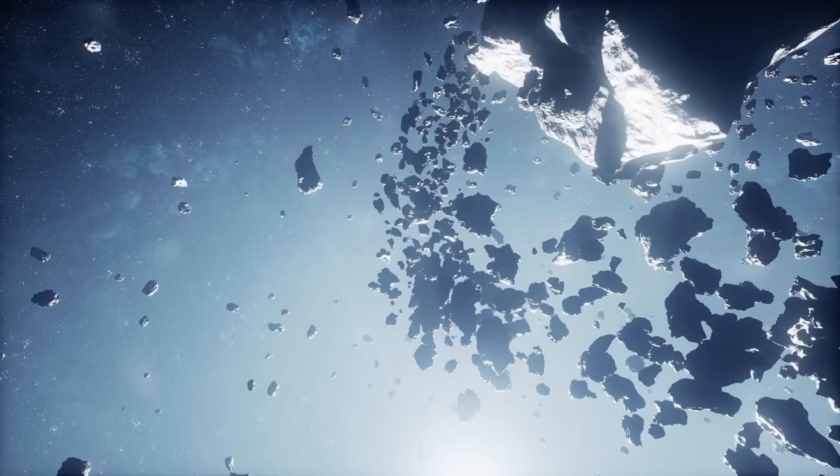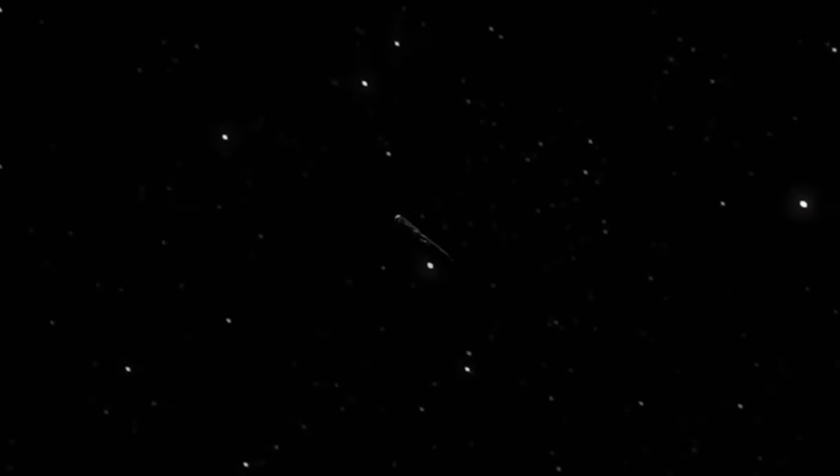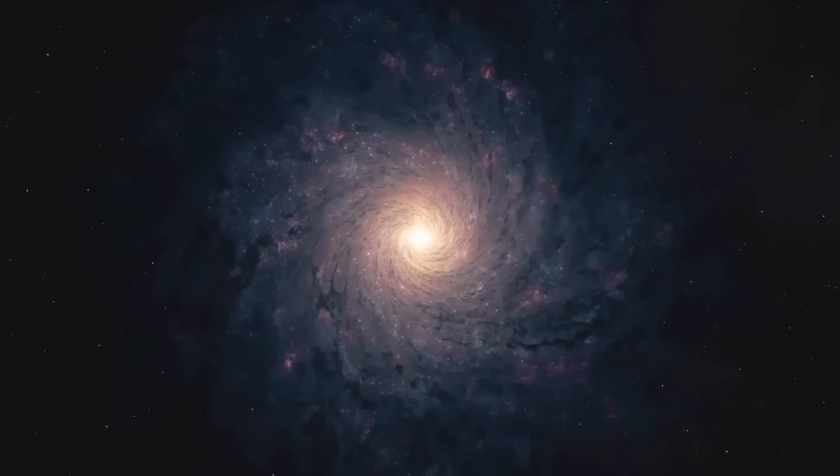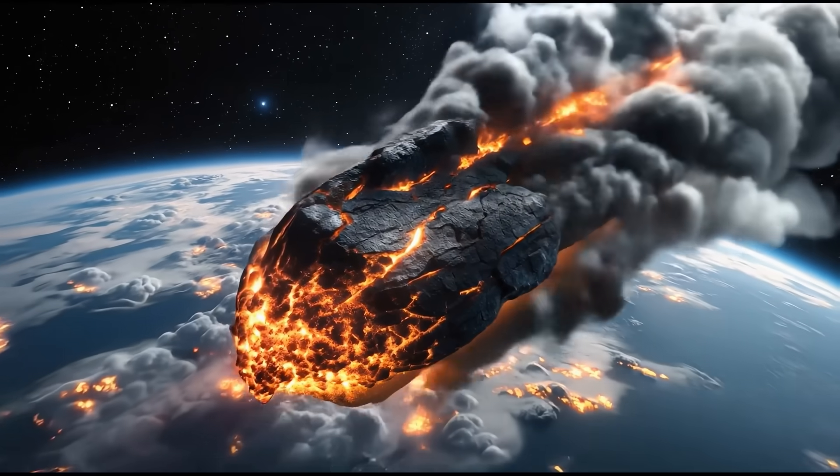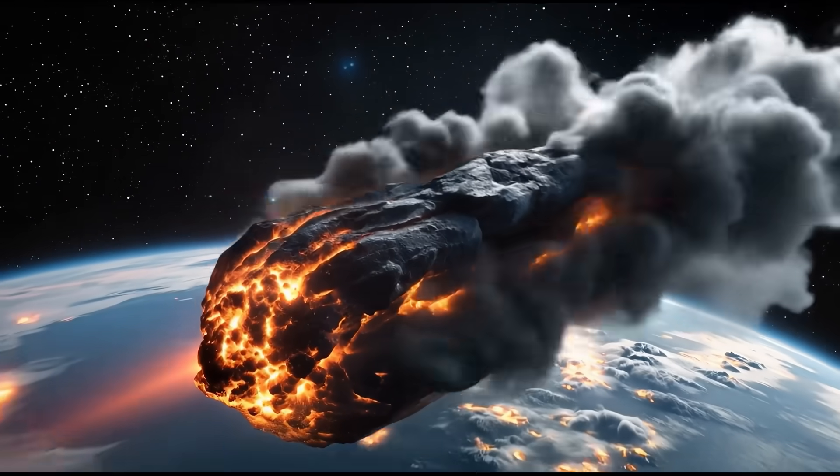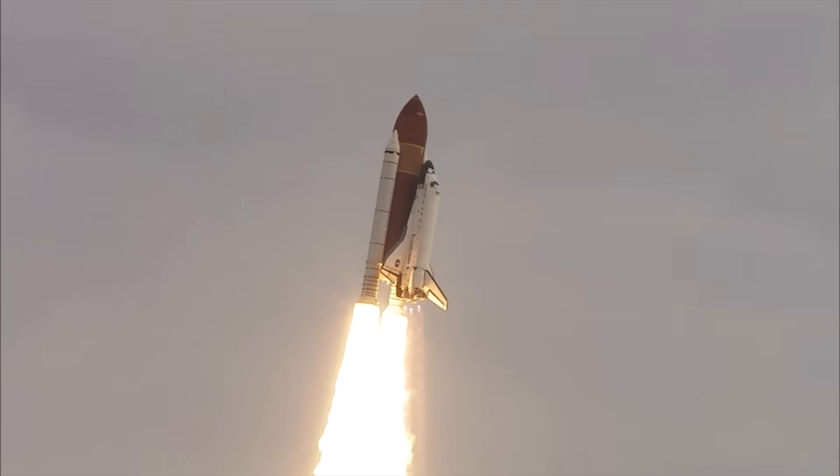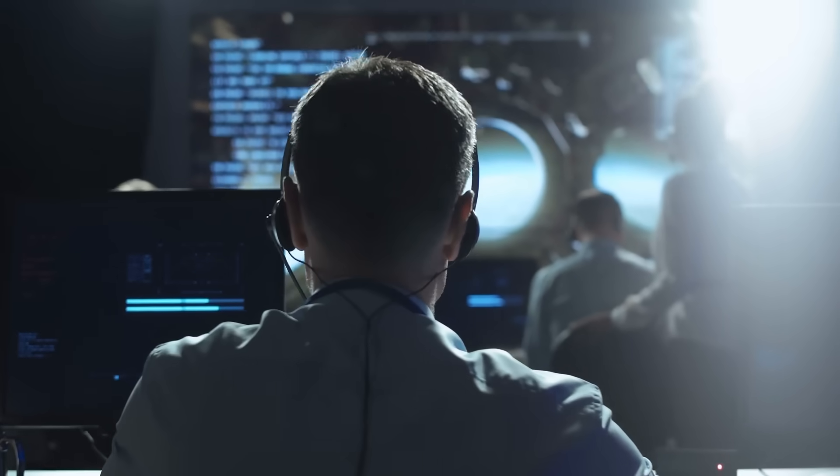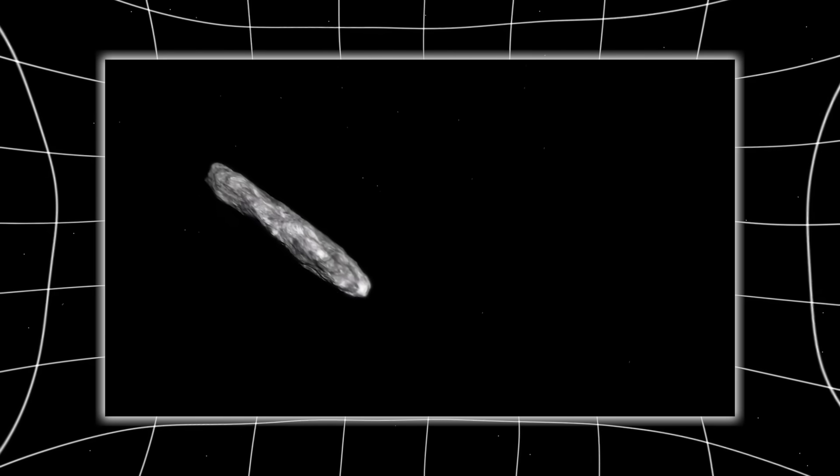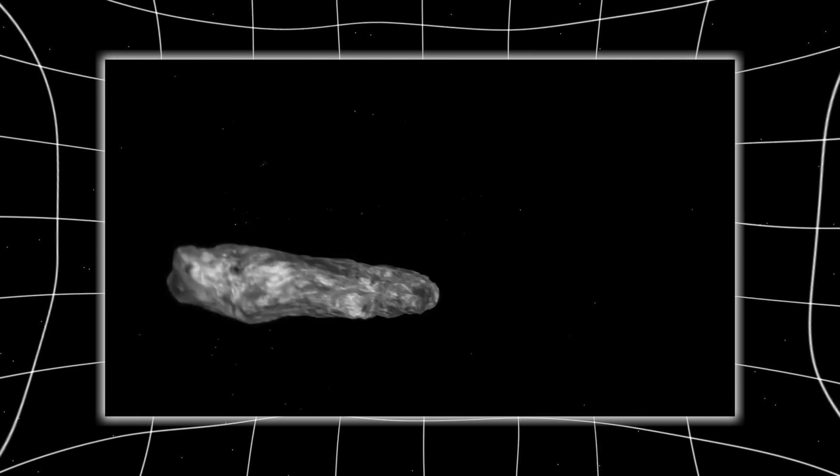By the end of October, new tracking data confirmed what everyone feared. The deviation was real. Over a span of 19 hours, the positional discrepancy widened by over 4 arc minutes, equivalent to hundreds of thousands of kilometers. According to orbital analysts, maintaining that drift would require a lateral velocity of nearly 4 kilometers per second—more thrust than some of our own deep space probes could ever produce. Theories exploded across the community. Some said it was outgassing. Others blamed solar wind. But solar wind doesn't push sideways.